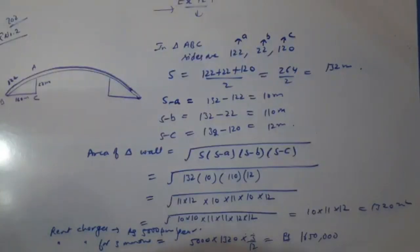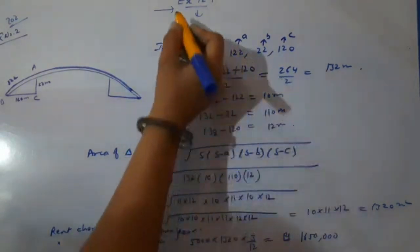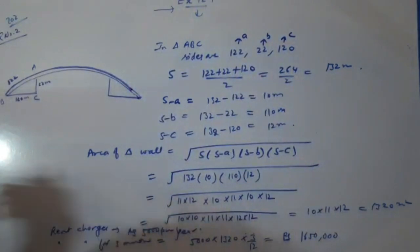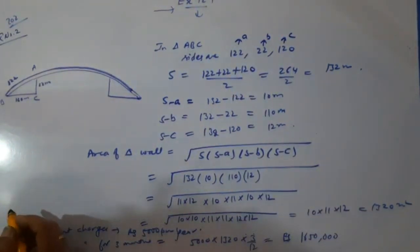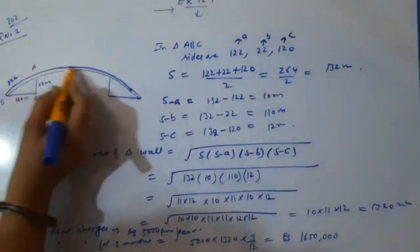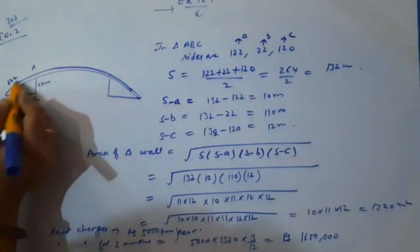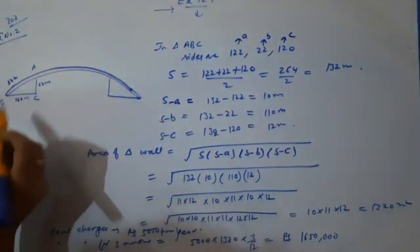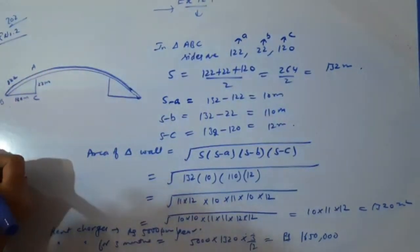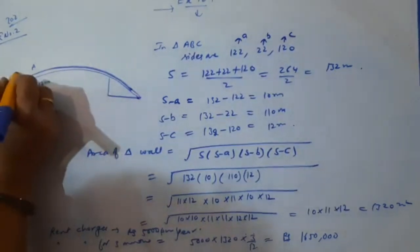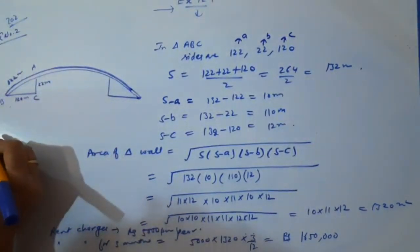Yes 9th class, now let us do question number 2 of your exercise 12.1. What is this question asking? The triangular side wall of a flyover has sides 122 meter, 22 meter, and 120 meter.